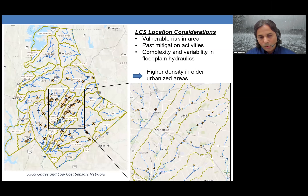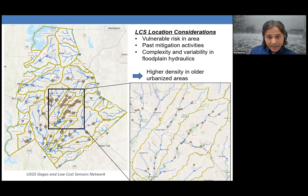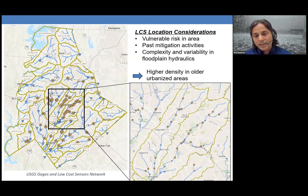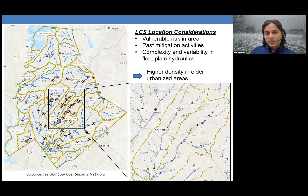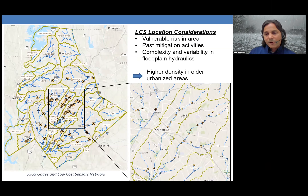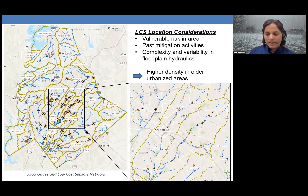A map shows the low-cost sensors as orange dots and USGS gauges as blue triangles, scattered across the county with concentrations in the central corridors — the older portions of the city with the most flood vulnerability and the most complex drainage systems. A key consideration was how to strategically deploy sensors to get the best bang for the buck, with higher density in older urbanized areas.